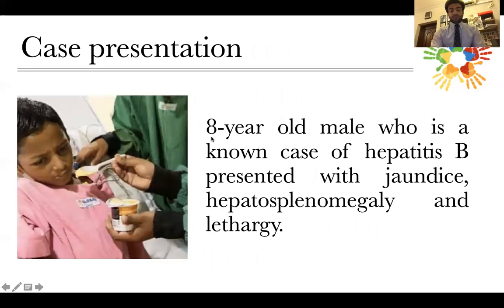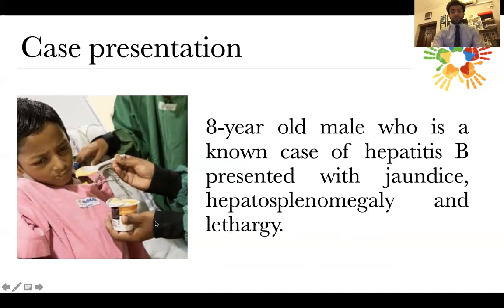This is a very common case presentation: an eight-year-old male with hepatitis B, presenting with jaundice, hepatosplenomegaly, and lethargy. This is a very common scenario in liver clinic. This is a chronic disease because it's prolonged more than six months — that is the definition. Jaundice, hepatosplenomegaly, and lethargy are very important signs in chronic liver disease. This child is reluctant to feeding because of loss of appetite, hinting at a very important issue: malnutrition. Malnutrition is a very important part of chronic liver disease and should be considered, as nutrients are essential in management.